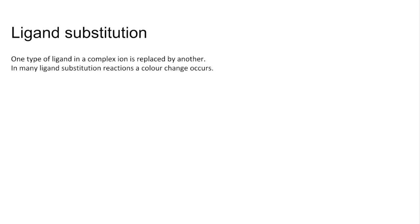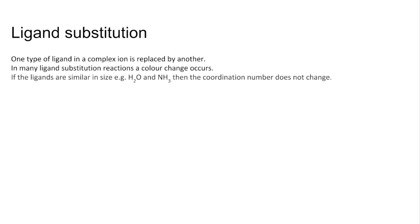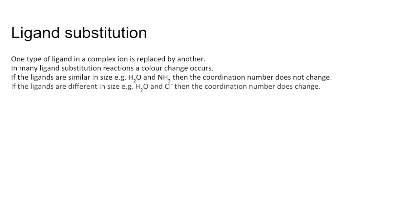In many ligand substitution reactions you can see a colour change. If the ligands are similar in size — for example water and ammonia — then the coordination number, that's the number of coordinate bonds going to the central transition metal ion, doesn't change. But if the ligands are different in size — for example water and chloride ions — then the coordination number does change.